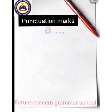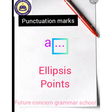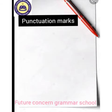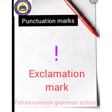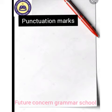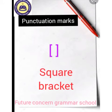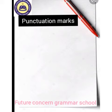This is called ellipsis points. This is called exclamation mark. This symbol is called square bracket. And this is called underline.